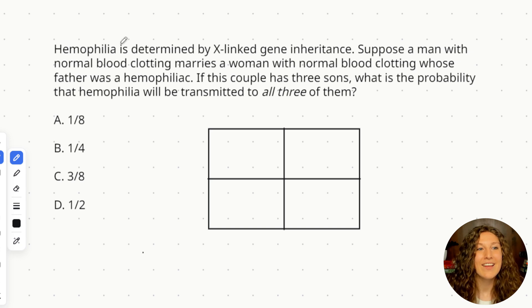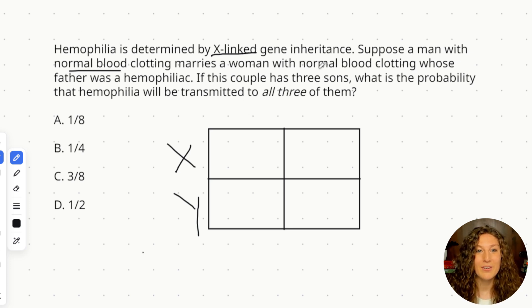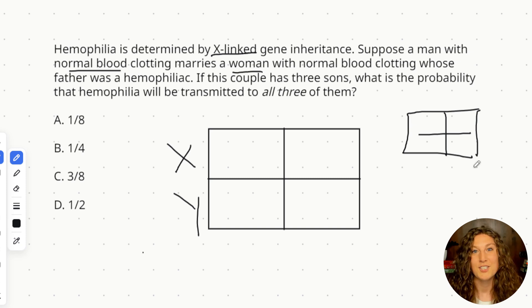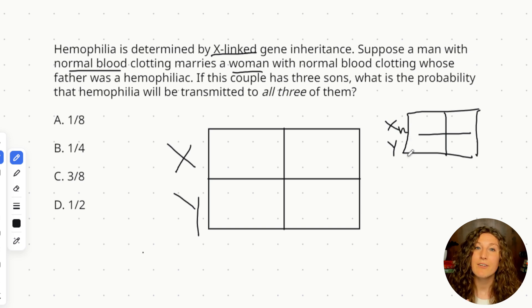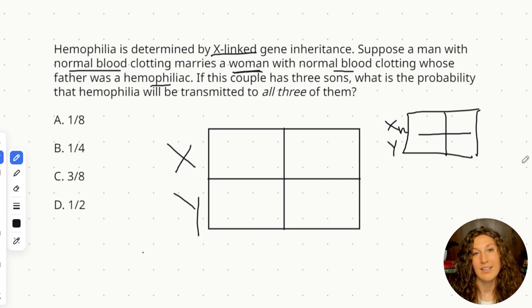In this situation, hemophilia is determined by X-linked or sex-linked gene inheritance. A man with normal blood clotting — and males have X and Y, so they only have one copy of the X gene — does not have hemophilia. He marries a woman with normal blood clotting whose father was a hemophiliac. I'm inferring that hemophilia is a recessive gene because if her dad had the gene, it's a guarantee that the daughter had at least one copy of the hemophilia gene, and if it were dominant, she would also have hemophilia.